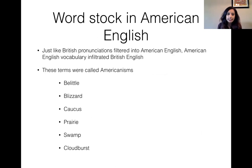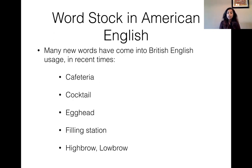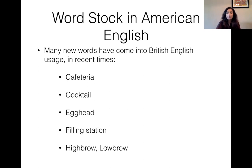Just as British pronunciations came into American English, certain American words went into British English dialect — these are called Americanisms. Words like 'belittle,' 'blizzard,' 'caucus,' 'prairie,' 'swamp,' 'cloudburst,' etc., were very particular to the American terrain but British English speakers do know and use these words. Many new words have also come into British English usage in recent times, like 'cafeteria,' 'filling station,' 'highbrow,' 'lowbrow,' 'cocktail,' 'egghead' — new words that British English has borrowed from American English.